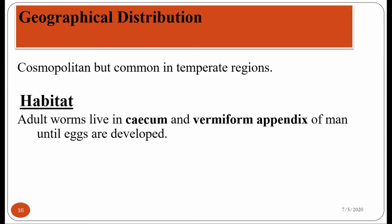The habitat of these worms in human beings is the large intestine, mainly the cecum and vermiform appendix. The adult male and female worms of Enterobius vermicularis reside in the cecum and vermiform appendix until the eggs are developed. The adult worms attach to the mucosal regions of the cecum and vermiform appendix with the help of their anterior portions.